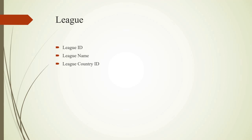In League Entity, we have attributes: league id, league name, and league country id. In each league, there are more than one team. So, League Entity has one domain relation with League Teams Entity.